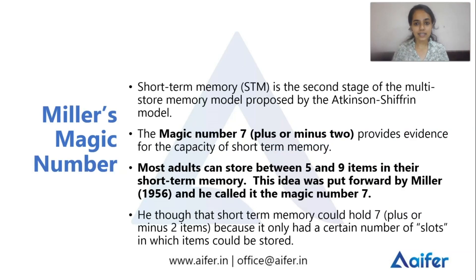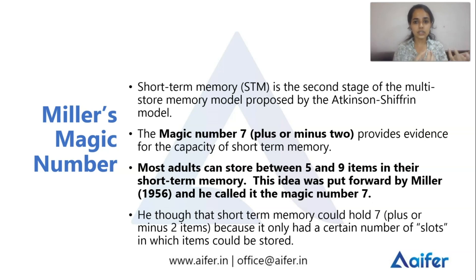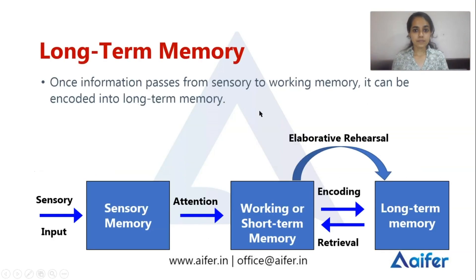This is the multi-store model. Miller's magic number is 7 plus or minus 2. Most adults can store between 5 and 9 items. The exact number of slots is 7, but chunking can expand effective capacity.